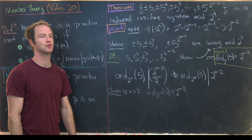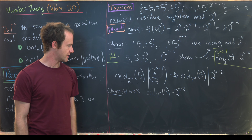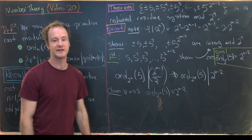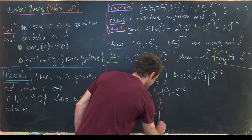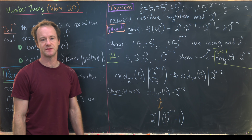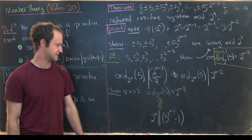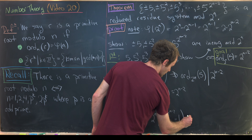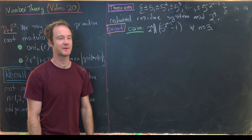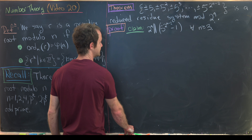This is equivalent to showing that 2^n exactly divides 5^(2^(n−2)) − 1 for all n ≥ 3, meaning 2^n divides it but 2^(n+1) does not. We'll prove this by induction. For n = 1 or 2, a primitive root exists, so we restrict to n ≥ 3.